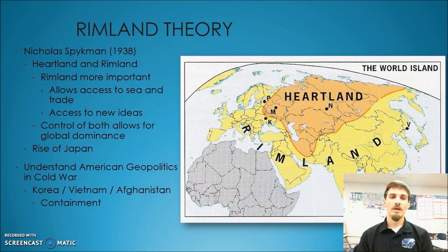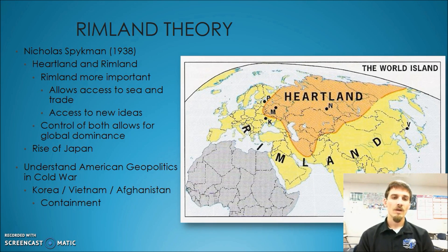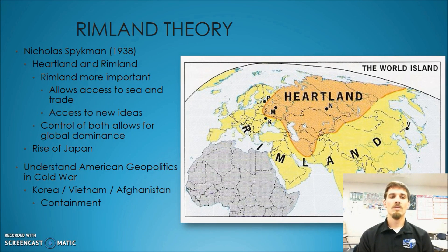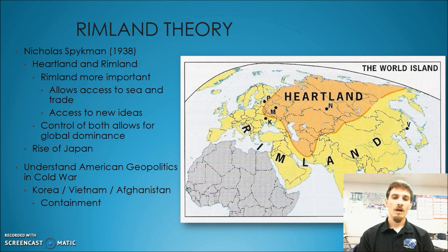The next theory we're going to look at is called the rimland theory. The rimland theory plays off of the heartland theory, and that's why I have those two one right after the other. The rimland theory was developed by an American named Nicholas Spykman. When he looked at the heartland, he agreed with Halford Mackinder that the heartland was a key pivotal area. But what he thought was that the rimland was more important than the heartland in terms of global domination and global power.